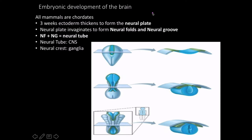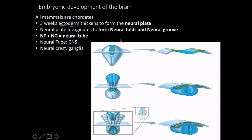For embryonic development, I don't really stress this so much — just kind of fun facts. After three weeks, the ectoderm is going to start to thicken to form the neural plate, which means that your skin is more closely related in terms of embryonic development to your nervous system than muscle is. The neural plate is going to invaginate to form the neural groove and the neural fold.